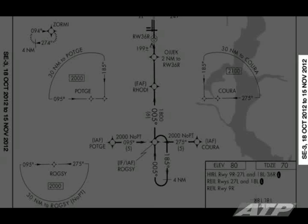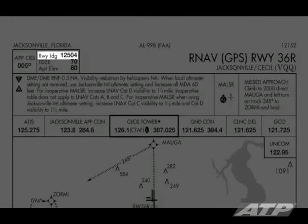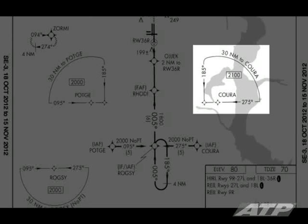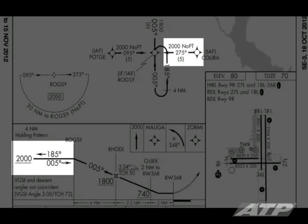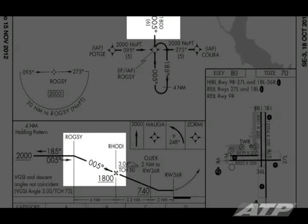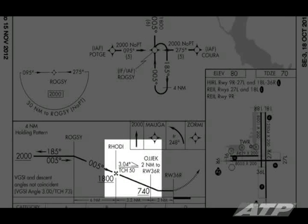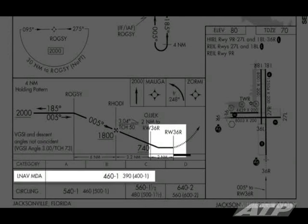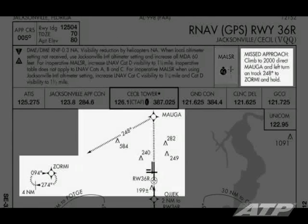Valid through November 15, 2012. Final approach course is 005. 12,500 feet of runway, field elevation 80 feet, touchdown zone 70 feet. Sector altitude 2,100 feet until CORA. Direct track of 275 and minimum altitude of 2,000 from CORA to ROGSI. Minimum altitude of 1,800 from ROGSI to RODI. 740 from ROGSI to OJEC, which is 2 nautical miles from the missed approach point. LNAV MDA of 460 until the missed approach point. Look for the runway. Upon the missed, climb to 2,000 direct MAUGA, and left turn on track 248 to ZORMI and hold. Teardrop entry with an inbound course of 094, 4 nautical mile legs.